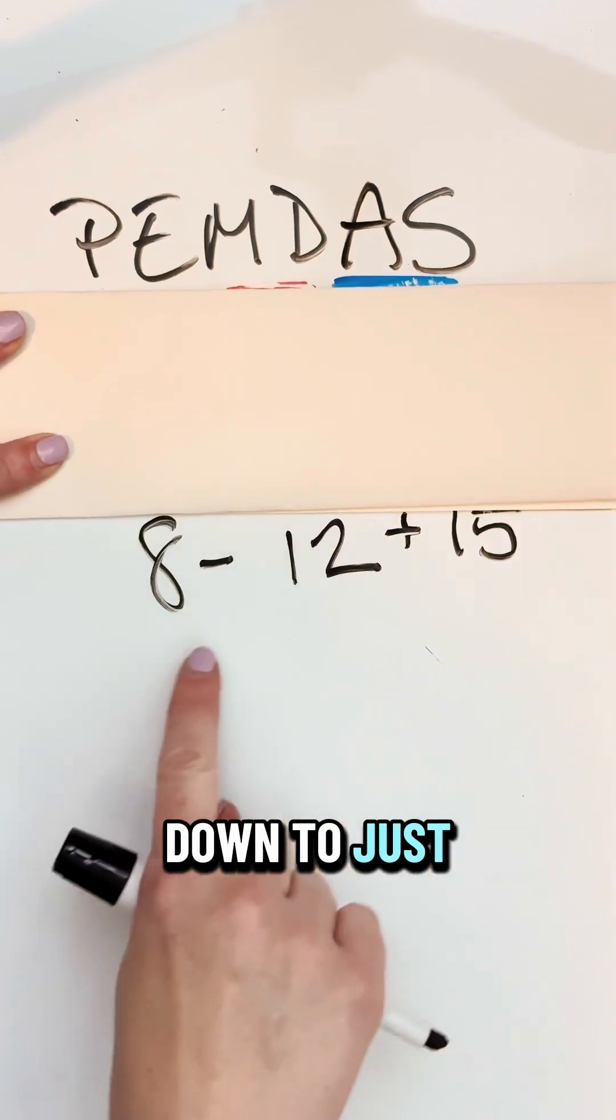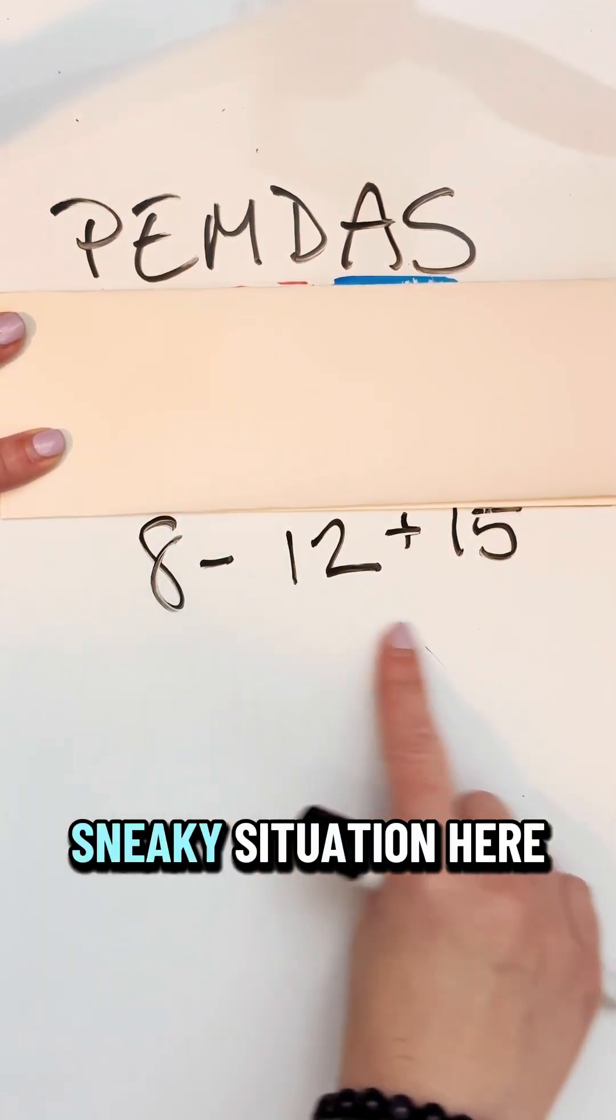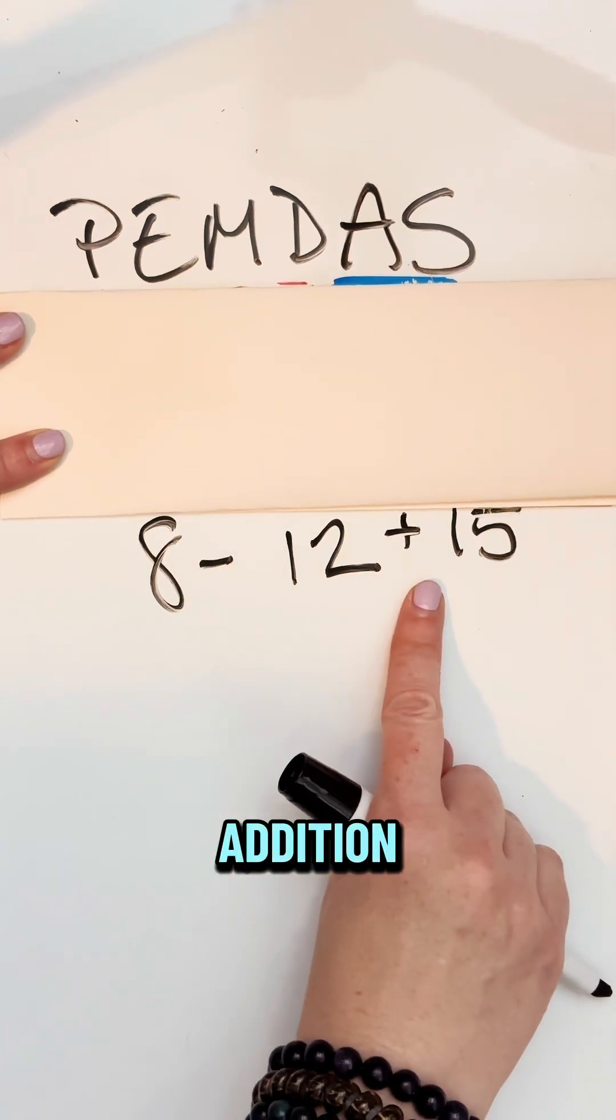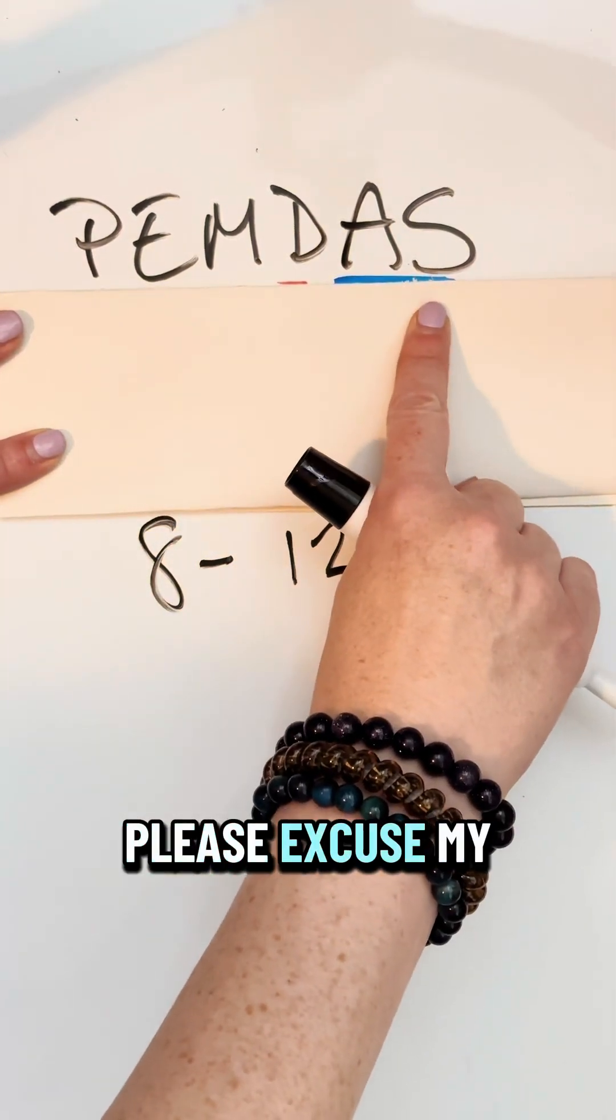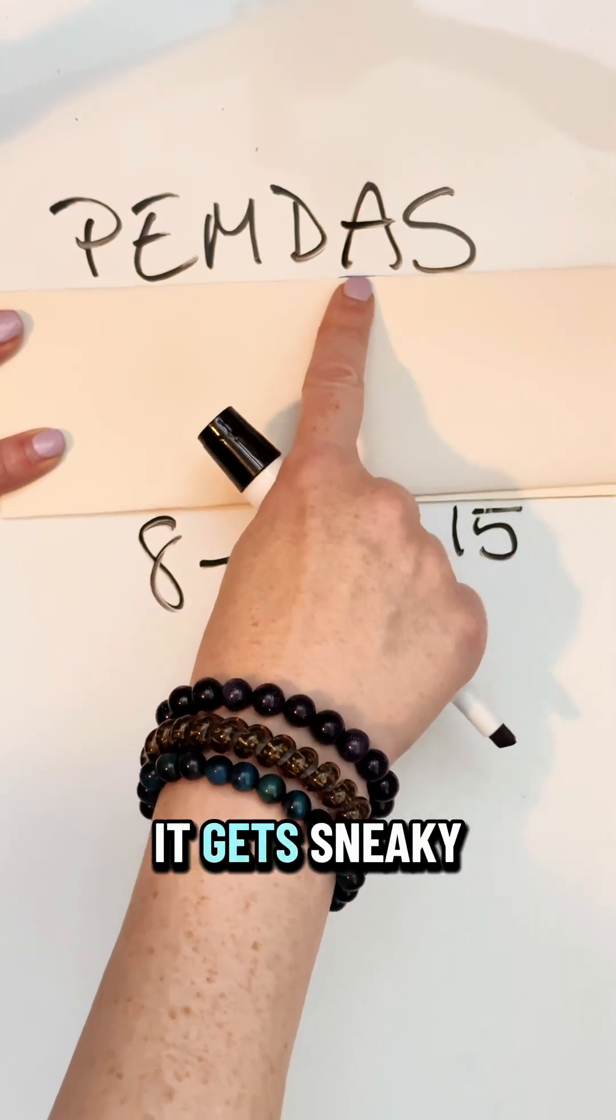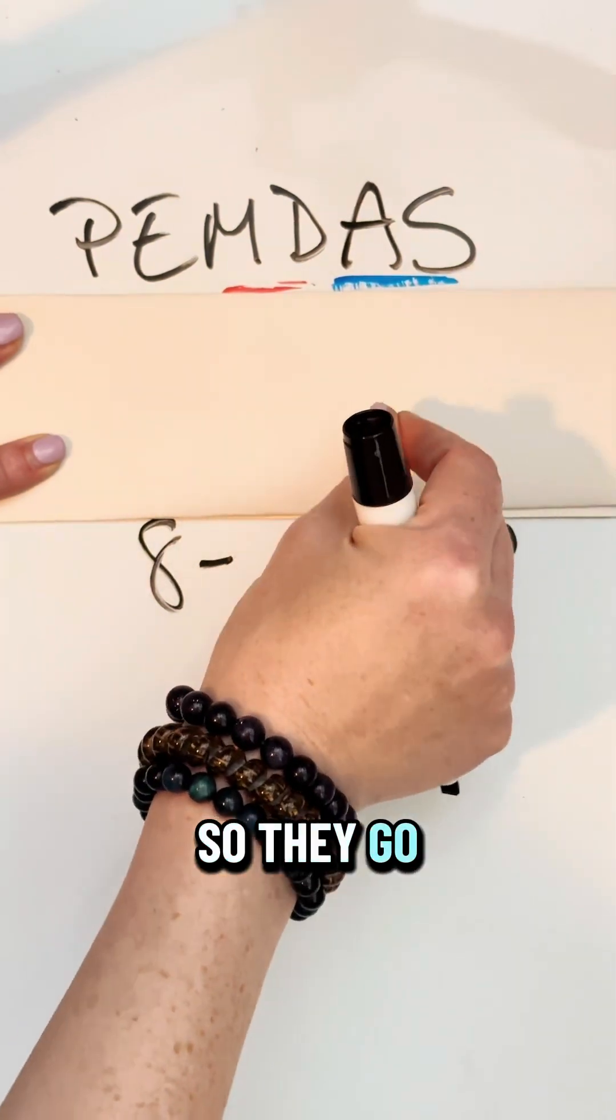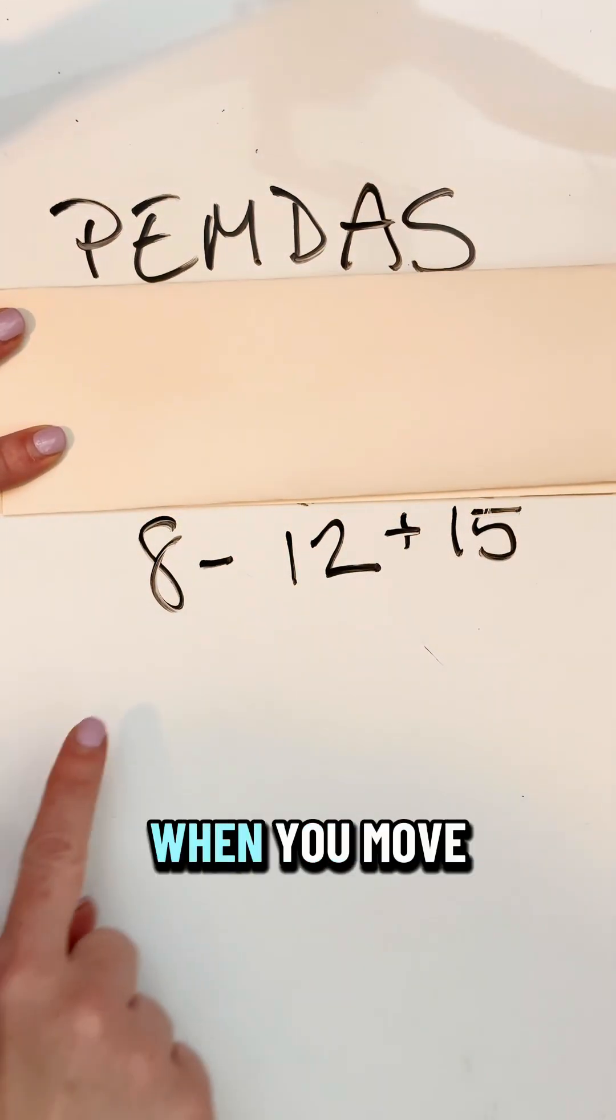Now I'm down to just 8 minus 12 plus 15. We are looking at a very sneaky situation here, because I have both subtraction and addition. And if you just referred to please excuse my dear Aunt Sally, this has my addition first. This is where it gets sneaky. Remember, we underlined, it's a bit smeary now, but we underlined our addition and subtraction, so they go together. You do whichever one comes first when you move from left to right.